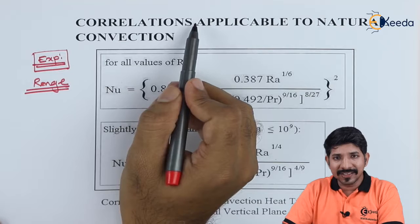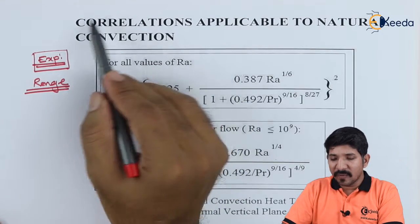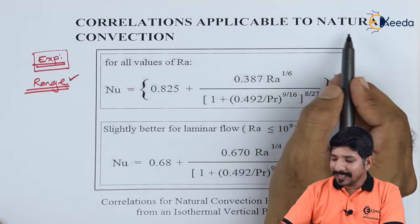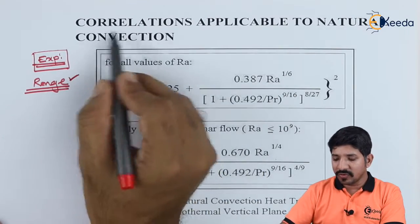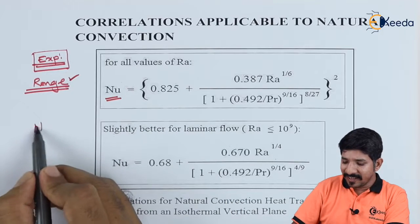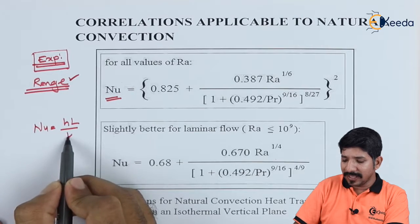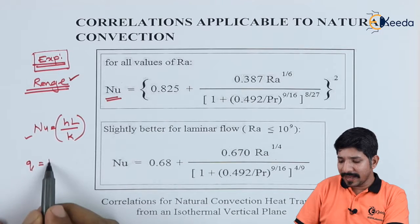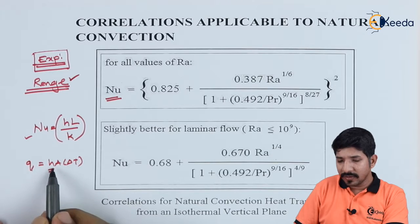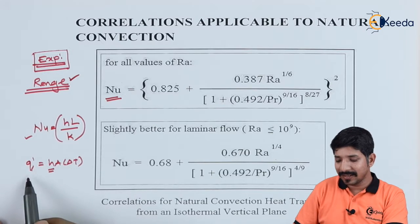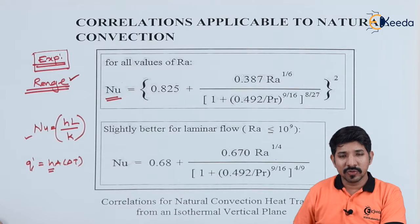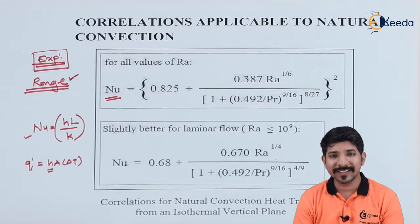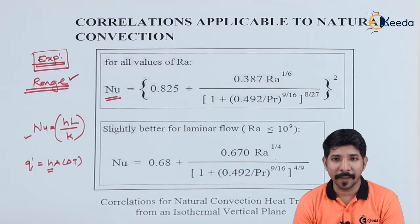Let us understand what we mean by correlations — they are nothing but the product of various experiments and are always range-bound, given for various conditions. In the case of natural convection, with the help of those correlations we find the Nusselt number, which itself is given as HL/K. Once we find the Nusselt number we can find the value of H, and then Q is given by H·A·ΔT. So once we get the heat transfer coefficient H, we can find the rate of heat transfer Q. This is the process — we need to find the Nusselt number, and for that we need to know the various correlations for various shapes of a body.